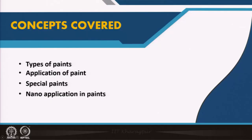In the previous two lectures of this module, we have discussed paints. As architects, we need to know the different types of paints, what is to be recommended on what type of surface, and how it is to be applied. Today we will try to finish the paints chapter, covering different types of paints, their application, special types of paints, and nano applications specific to paints.